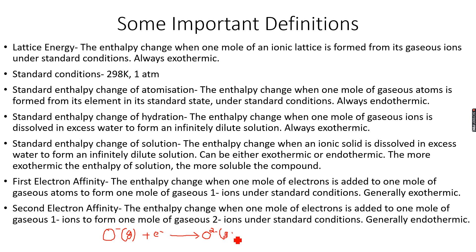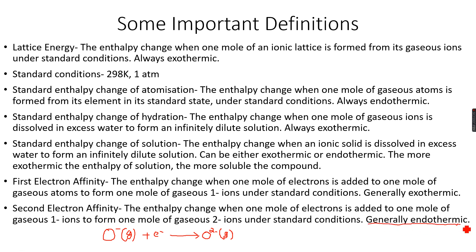The state symbol is again very important — understand the conditions. The second electron affinity is generally endothermic. This is because O⁻ ions have a negative charge and electrons also have a negative charge. Since like charges repel, these negatively charged species repel each other. We need to supply energy to force this one mole of electrons onto the one mole of gaseous one-negative ions. Therefore, the second electron affinity is generally endothermic.